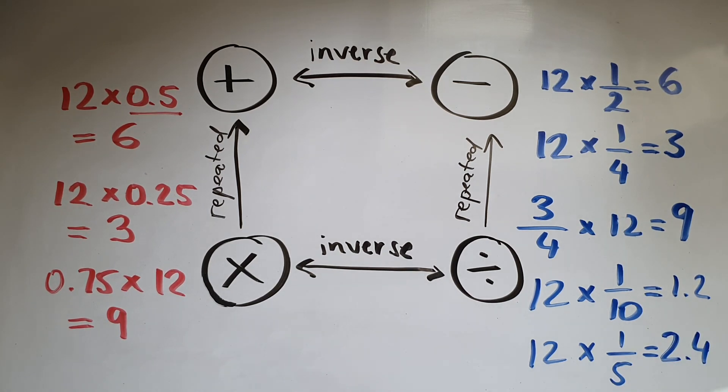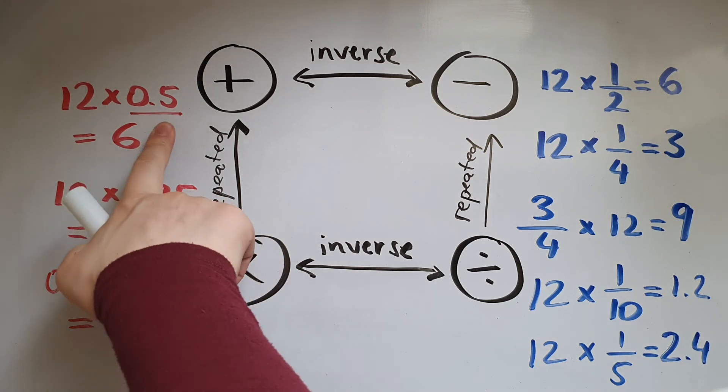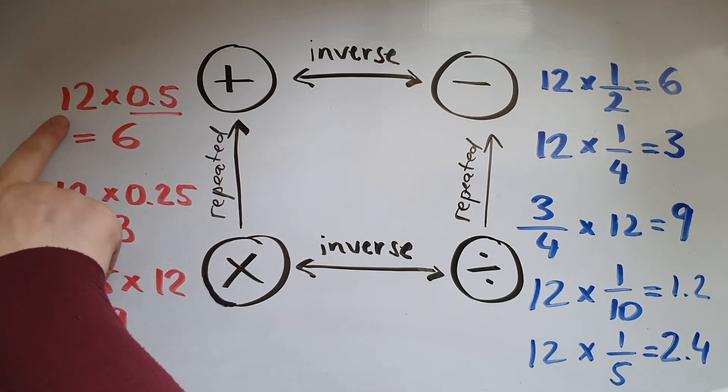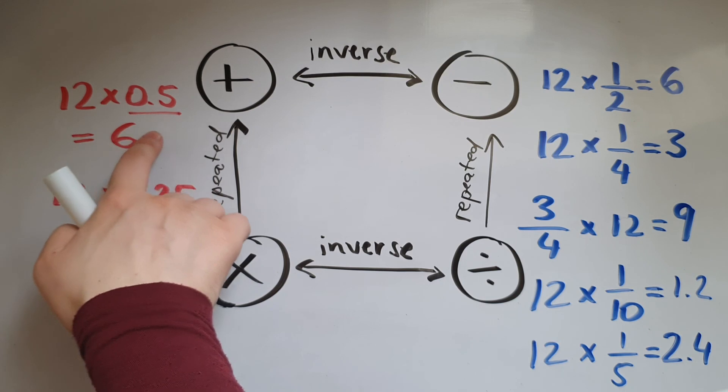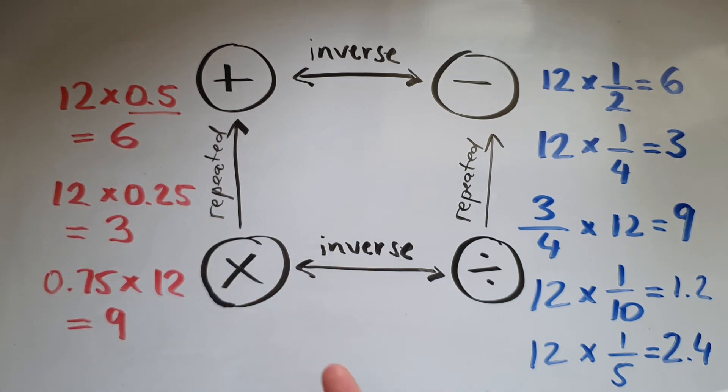And also percentages. So when I multiply a number, which in this case is 12 by 0.5, is the same as working out 50 percent of it. So 50 percent of 12 is going to be half of it, which is 6.